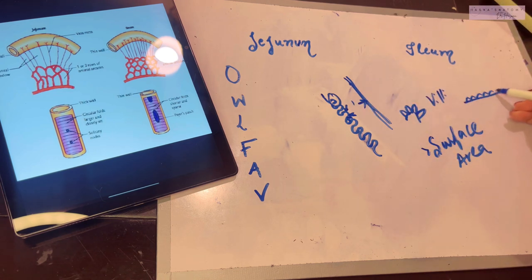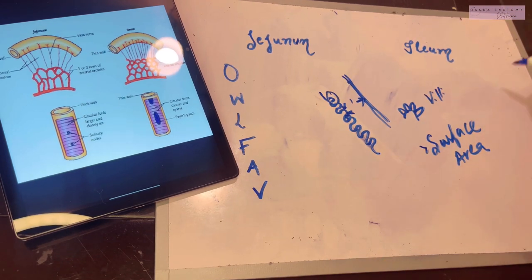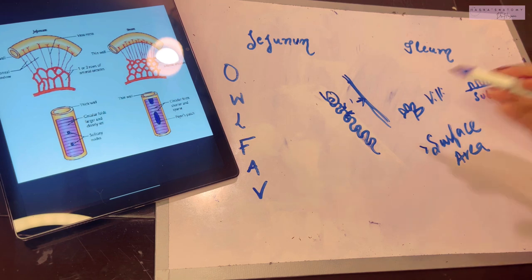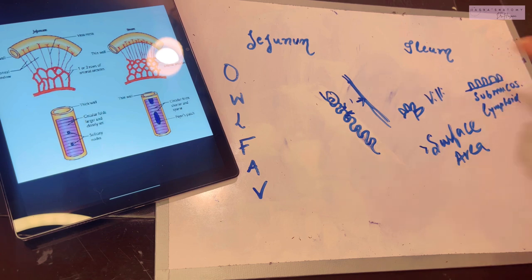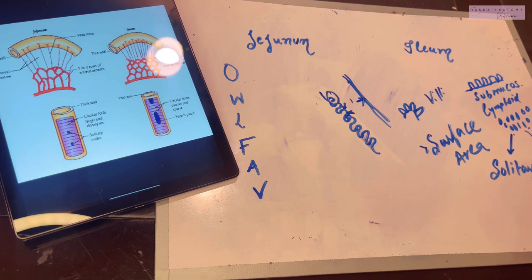The mucous membrane has an epithelium, and beneath it lies the submucosa. In a more histological view, you can see the mucous membrane thrown into folds with villi, and beneath lies the submucosa. Within the submucosa lie lymphoid follicles — collections of immunity cells, primarily lymphocytes, gathered together. There are two types: solitary lymphoid follicles and aggregated lymphoid follicles.